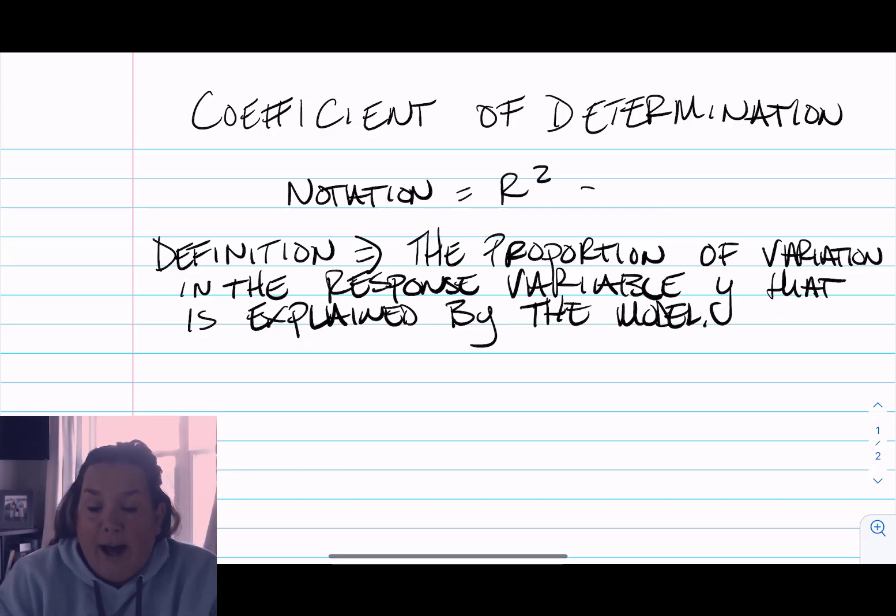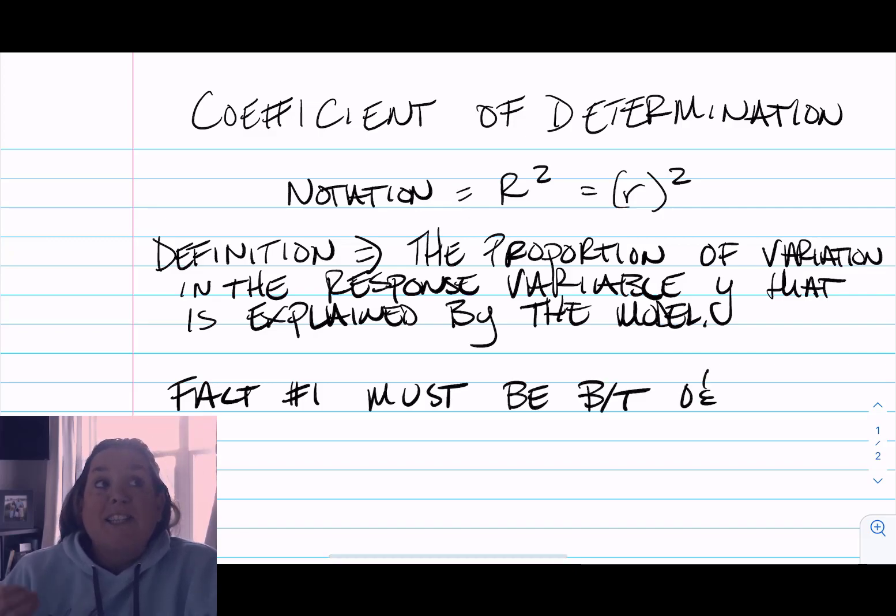In our class we're dealing with the straight line model. Because we're squaring r, R² has to be between 0 and 1. Remember that r had to be between negative 1 and 1, so R² has to be between 0 and 1.